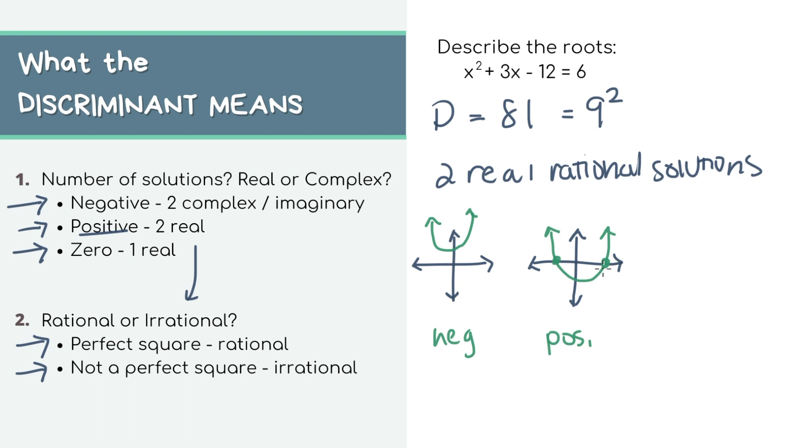So those two points represent your solutions or also known as roots. This is just a general sketch because you don't really know which way it faces or how narrow or wide the parabola actually is. Finally, if your discriminant is zero, then it crosses the axis at only one point, and that one point is the vertex.